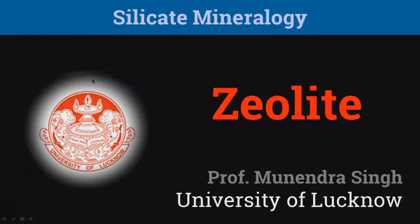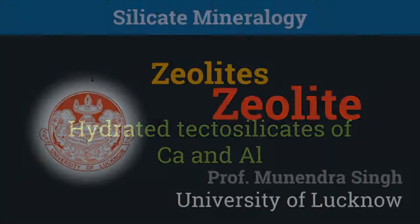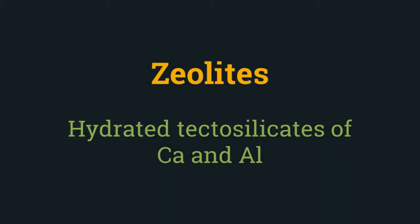In this presentation, we will explore zeolites. Zeolites are hydrated framework tectosilicates of usually calcium, aluminium, and sometimes sodium and potassium. They are a group of similar-looking minerals that form at shallow depths when the lava has reached below 200 degrees Celsius during its cooling.